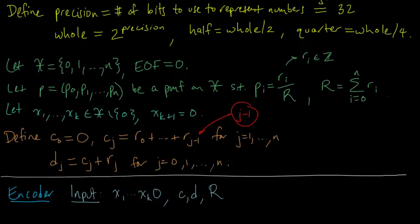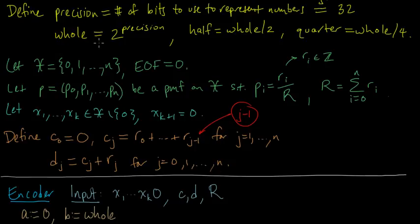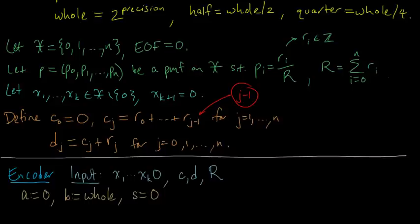And now, as before in the infinite precision case, we have the same sort of initializations. A is initialized to 0, and B is now initialized instead of to 1, we initialize it to whole. So whole is playing the role of the number 1. Everything is in integers. So B is whole, and we also initialize this S counter for the number of middle splits that we're going to do.